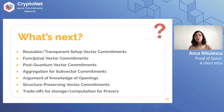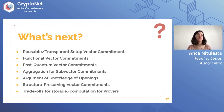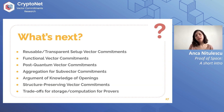Some open problems, also mentioned by Dario and of independent interest, are very useful for this use case: functional vector commitments with more expressive functions, so we can open positions and show they satisfy some function needed for the proof of replication; transparent setup that is quantum-resistant; aggregation for sub-vector commitments; the ability to show only an argument of knowledge of openings rather than the openings themselves; structure-preserving vector commitments to replace Merkle trees; and trade-offs for storage and computation for provers.